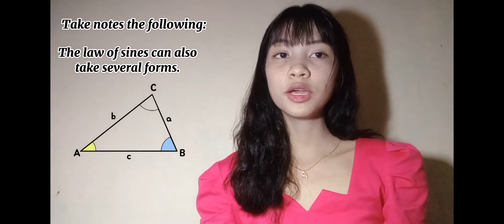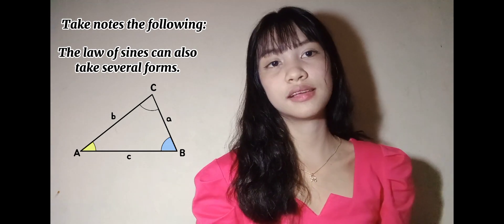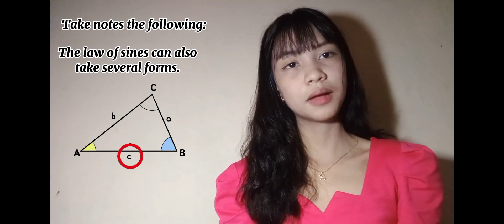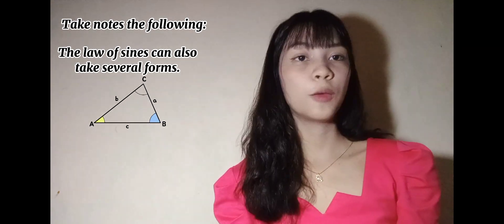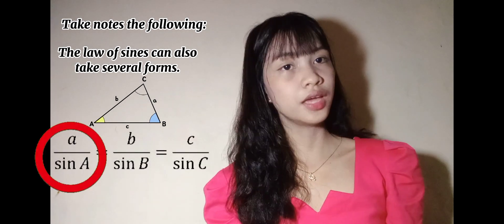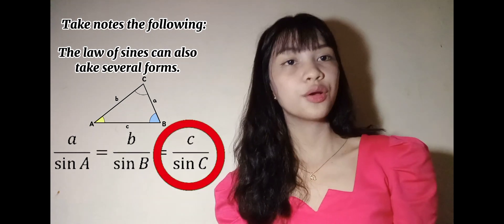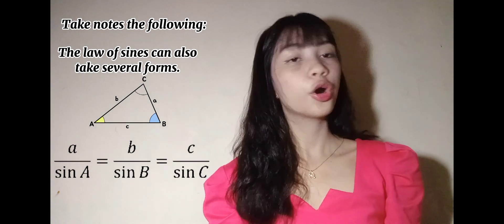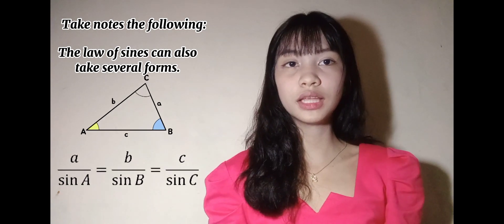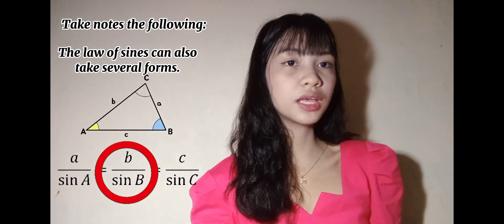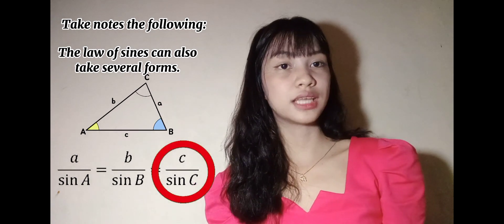That means if we have an oblique triangle and the given is side c and we are looking for side a, we can divide the formula. We can use: a/sin A = c/sin C. Or if the missing value is side b, we can use: b/sin B = c/sin C.